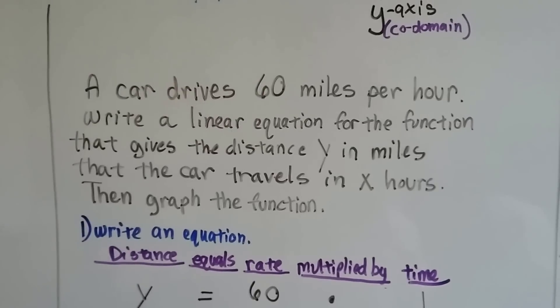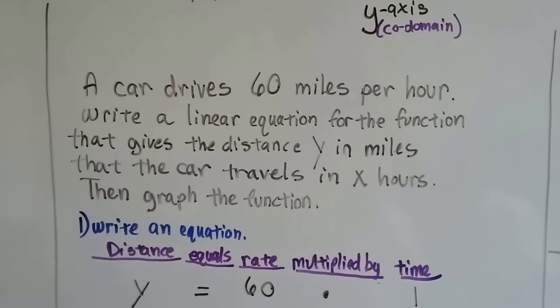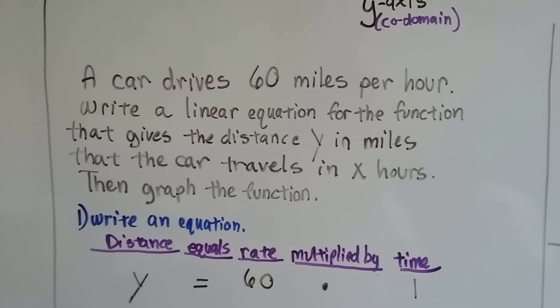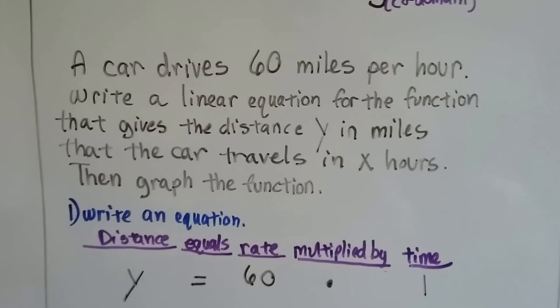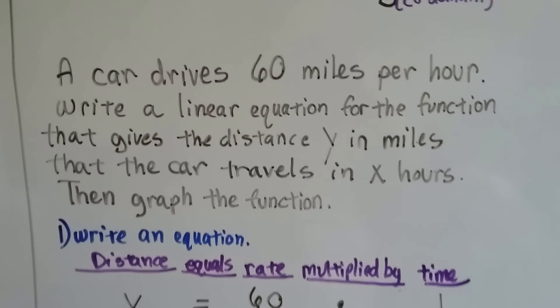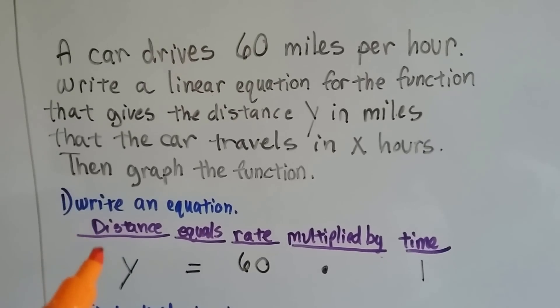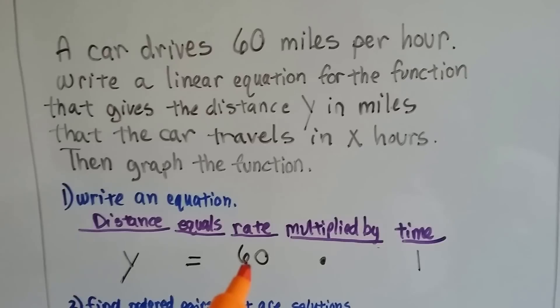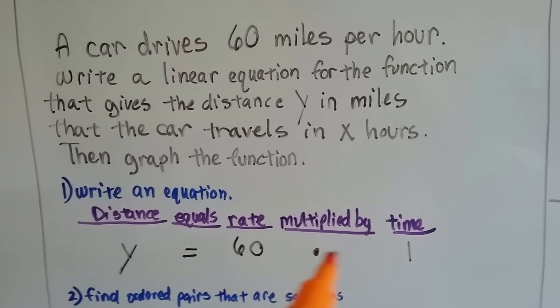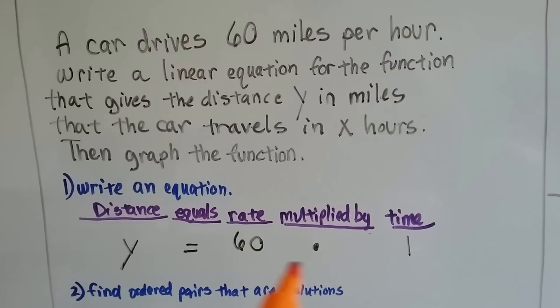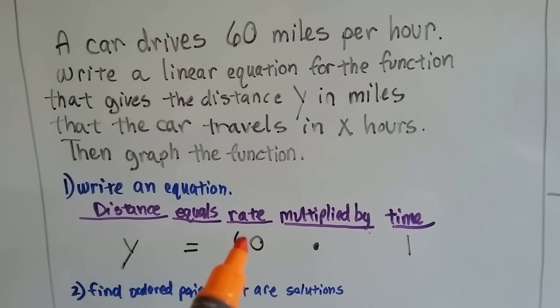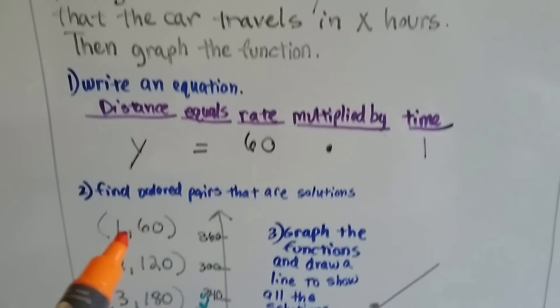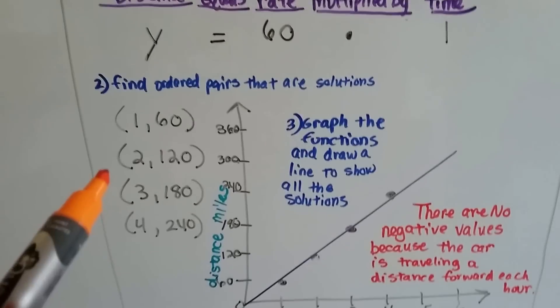A car drives 60 miles per hour. Write a linear equation for the function that gives the distance y in miles that the car travels in x hours. Then graph the function. It goes 60 miles per hour. So the distance is y. That's how far it goes. And the rate is 60, and it's multiplied by the time, an hour. So for every hour, it goes 60. And that'll equal y.